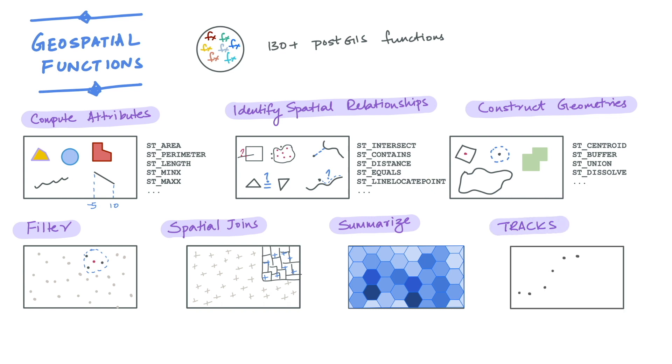To refresh our memories, track data is a geospatial data object used in Kinetica to represent the paths of objects in space and time. Each track requires a track ID, X and Y coordinates, and a timestamp.